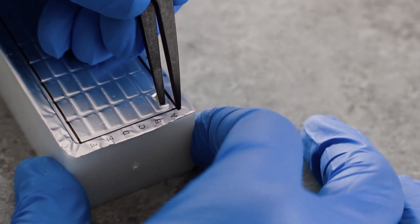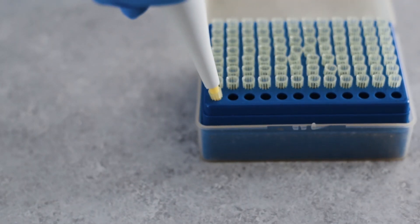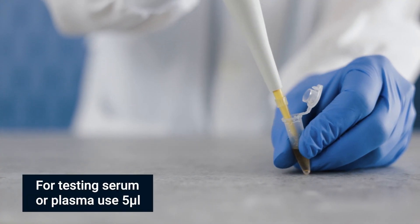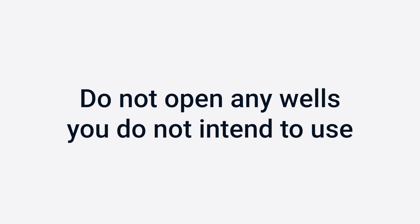Use tweezers to pierce the protective aluminum cover of row A. Use a micropipet to handle the sample. Each test requires a unique sample, so use a different sample for each opening. Do not open any wells of row A or other rows you don't intend to use. Do not remove the aluminum cover all at once.